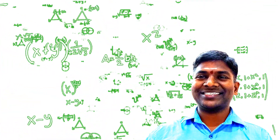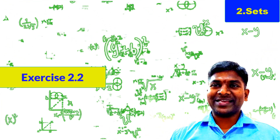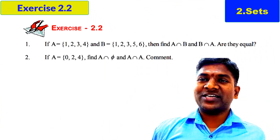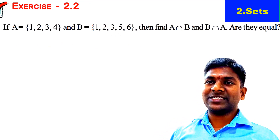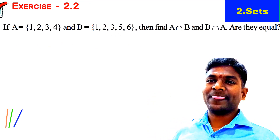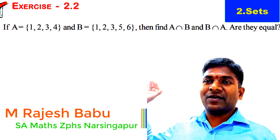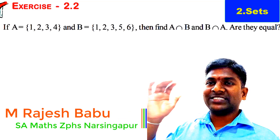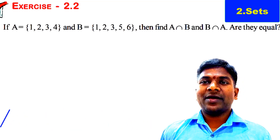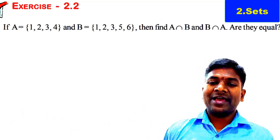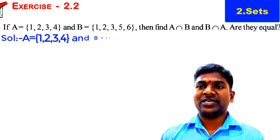Hi viewers and students, let's try to solve some questions from Exercise 2.2. The first question is: Set A consists of elements {1, 2, 3, 4} and Set B consists of elements {1, 2, 3, 5, 6}. We have to find A intersection B and B intersection A, and check if they are equal.